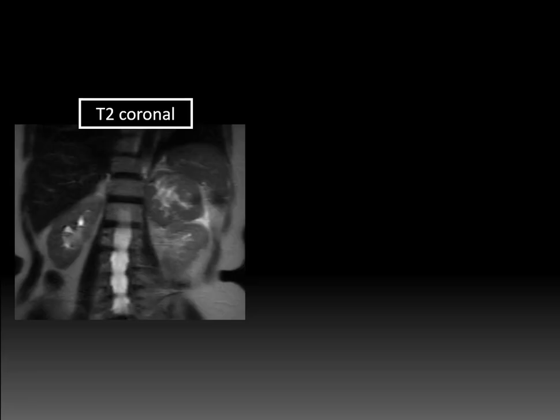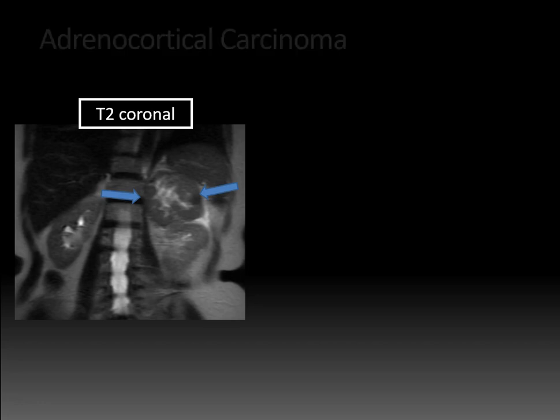On the T2 coronal image, you can again see the large size of the mass, superadjacent to the left kidney, with central T2 hyperintensity isointense to CSF in the spinal canal indicating necrosis. This was an adrenal cortical carcinoma.